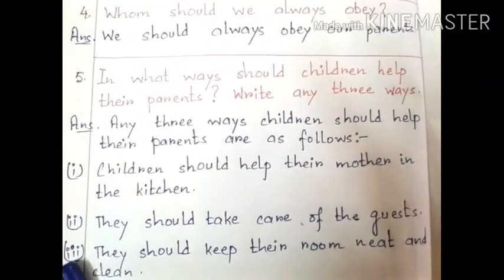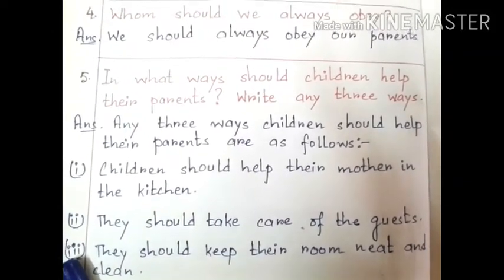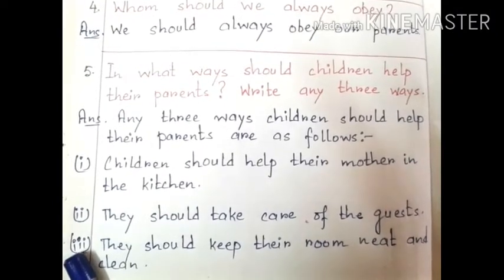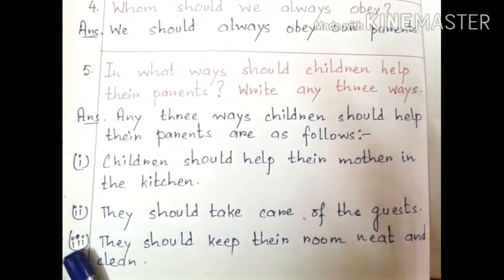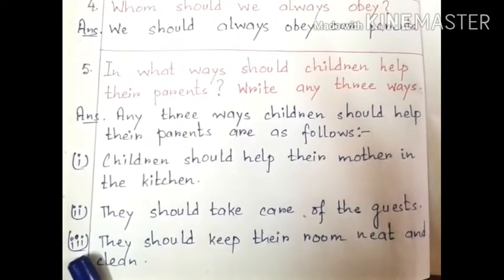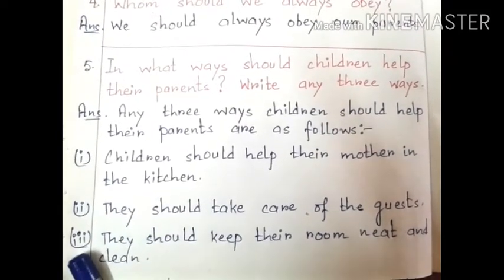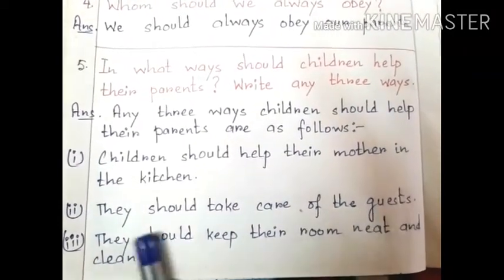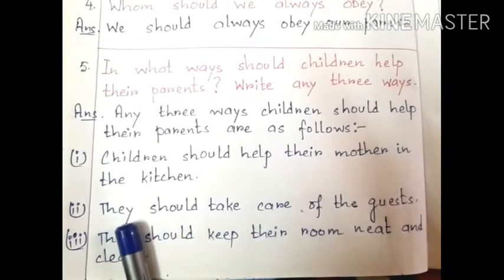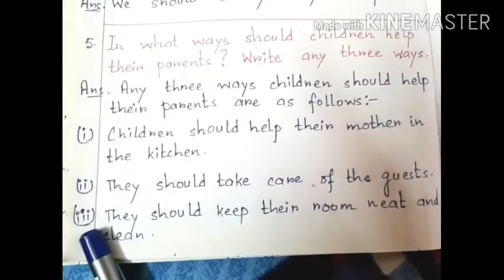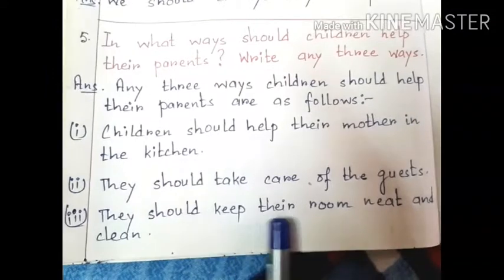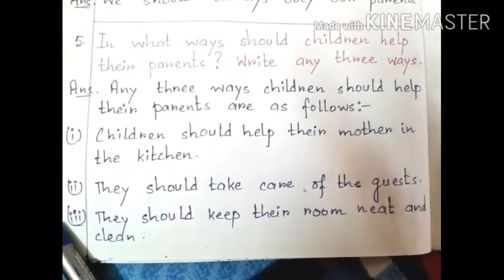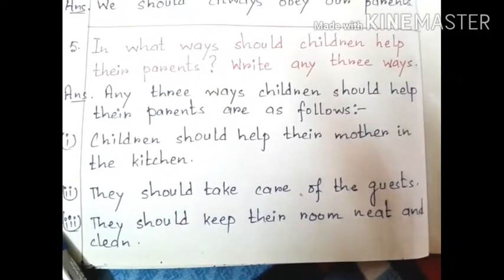Number one: children should help their mother in the kitchen. Number two: they should take care of guests — when guests come, greet them, open the door, offer water or something to make them comfortable. Number three: they should keep their room neat and clean.